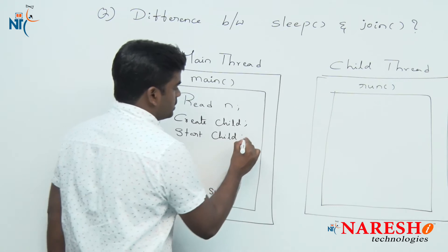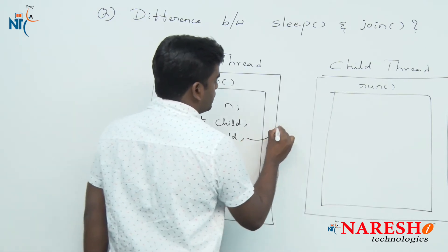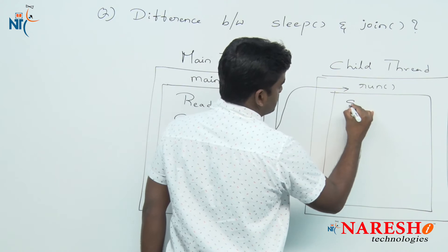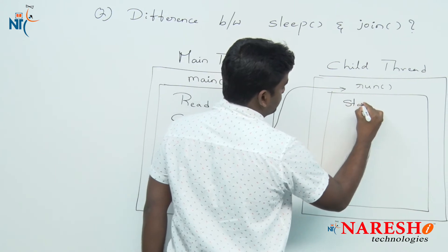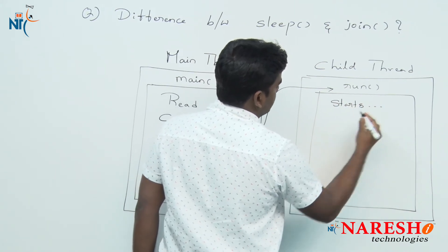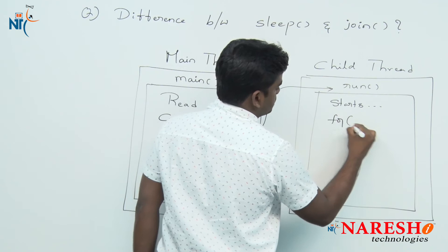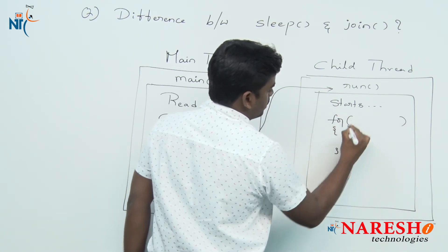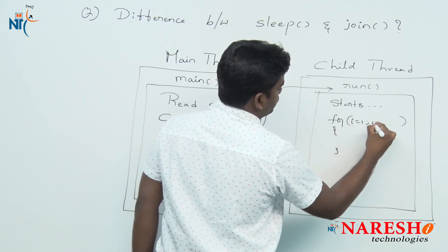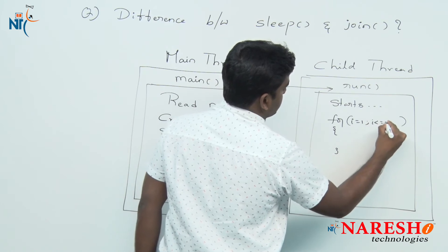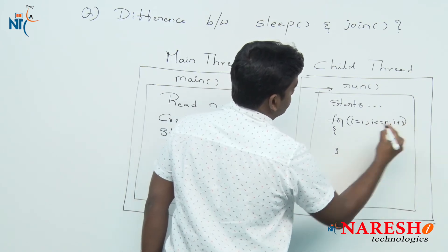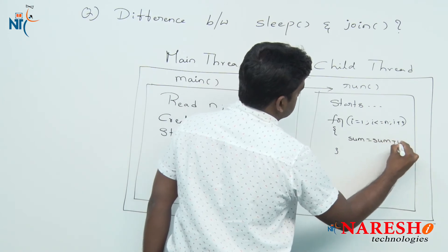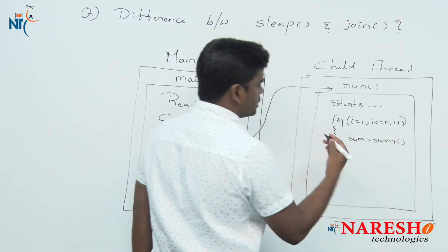Whenever you start the child thread, the run method executes and the calculation starts. Here we are writing the logic for sum of first N numbers: i value starts from 1 to N, i plus plus, sum equals sum plus i — any logic like this, no matter.